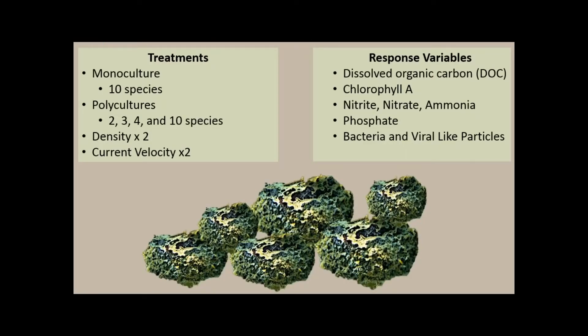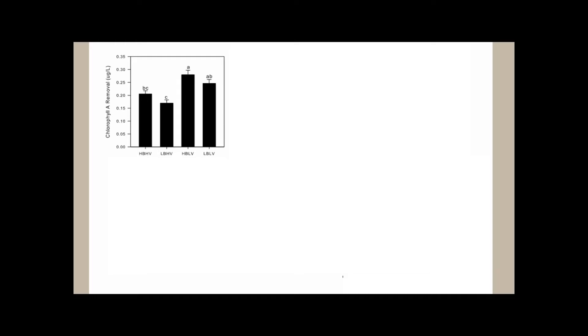In terms of treatment groups, I had 10 species that I used in monocultures and each of these were repeated at high and low biomass. And then I had polycultures using those species. So groups of two, three, four, and 10 species. And again, all of these were repeated at high and low biomass and high and low current velocity. My response variables that I looked at were dissolved organic carbon, chlorophyll A, nitrites, nitrates, ammoniums, phosphates, bacteria, and viral-like particles. So just to quickly do the math of what we're looking at here, that's over 140 treatment groups in one little experiment. It was quite massive, this project.